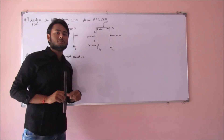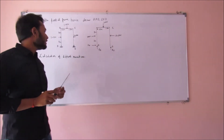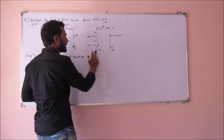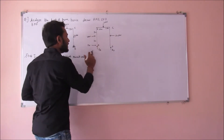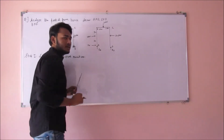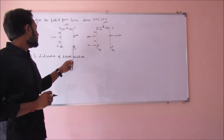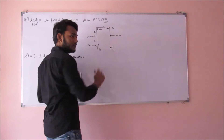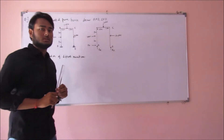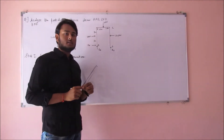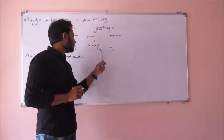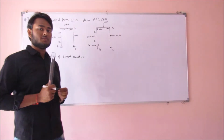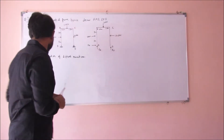This is the free body diagram of the given portal frame. As there is a hinge support present at A, we have taken two reactions: one in the vertical direction and one in the horizontal direction. On the other hand, as a roller support is present at D, only one reaction would come in the vertical direction. Now we can see that three unknowns are present, so we have to apply all three conditions of equilibrium. So let us start.